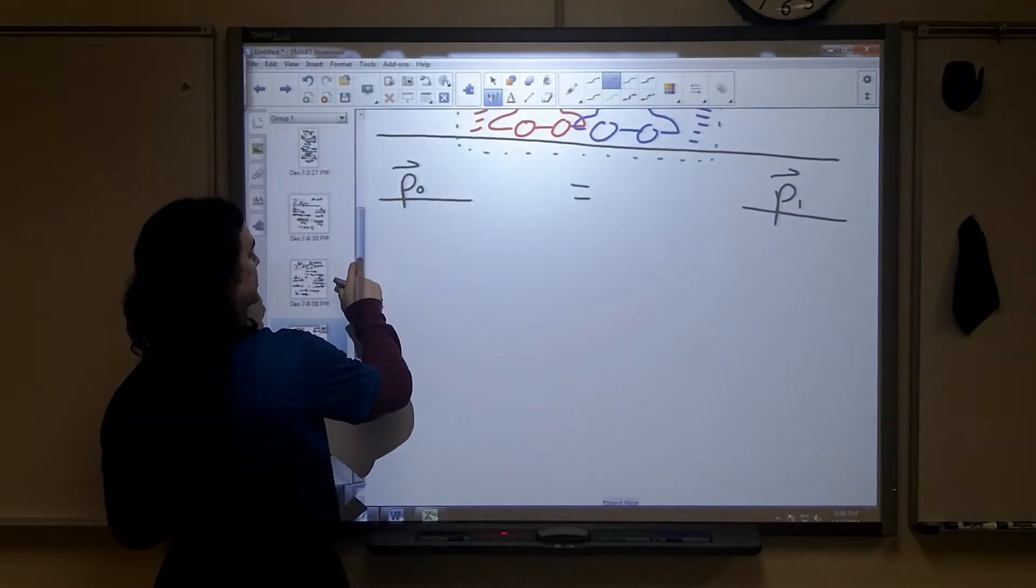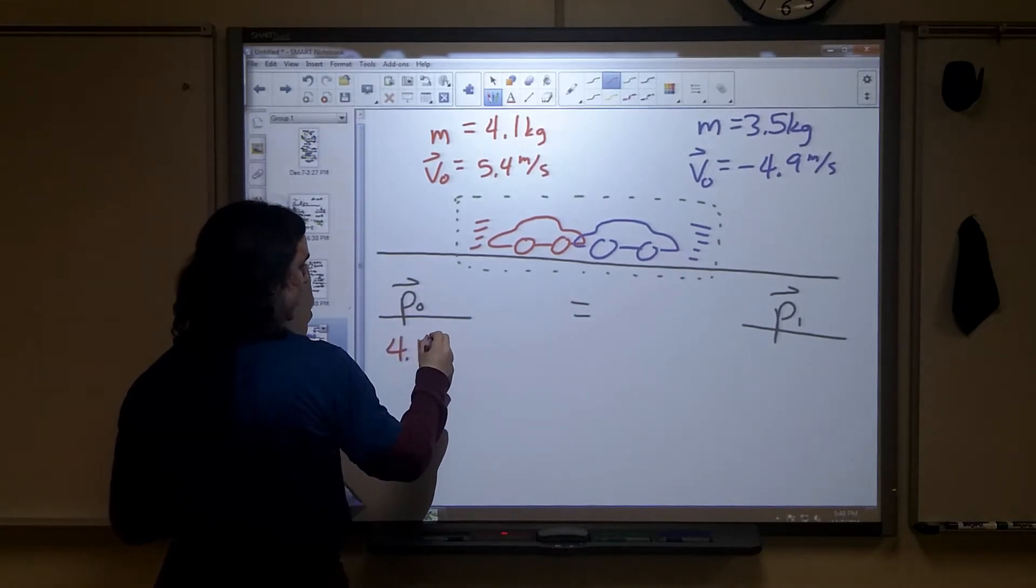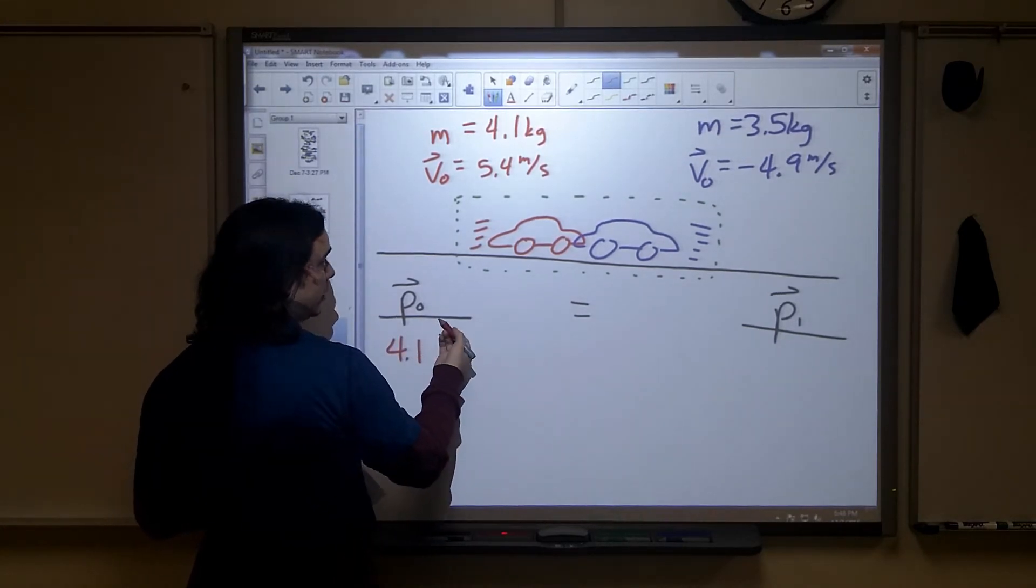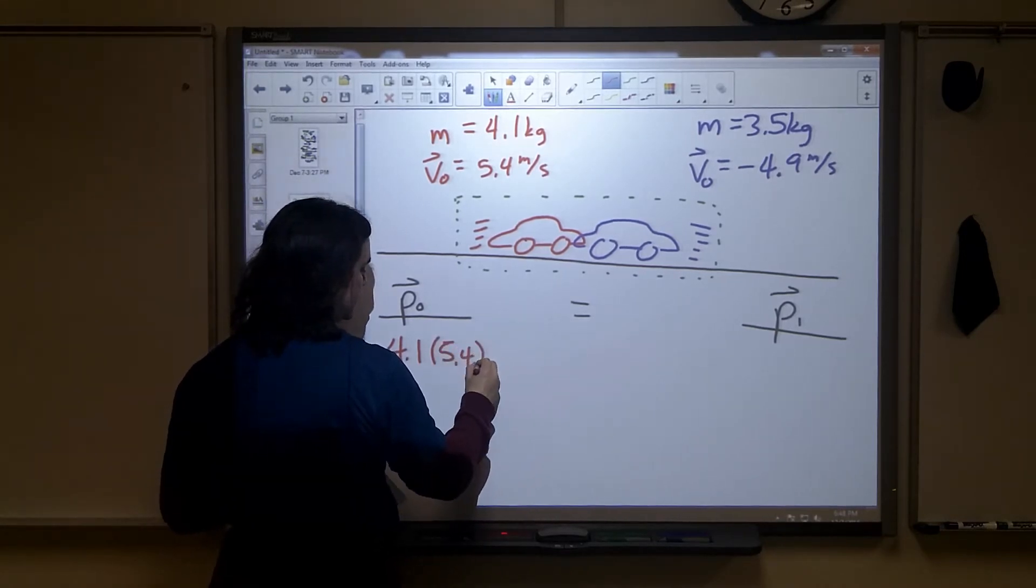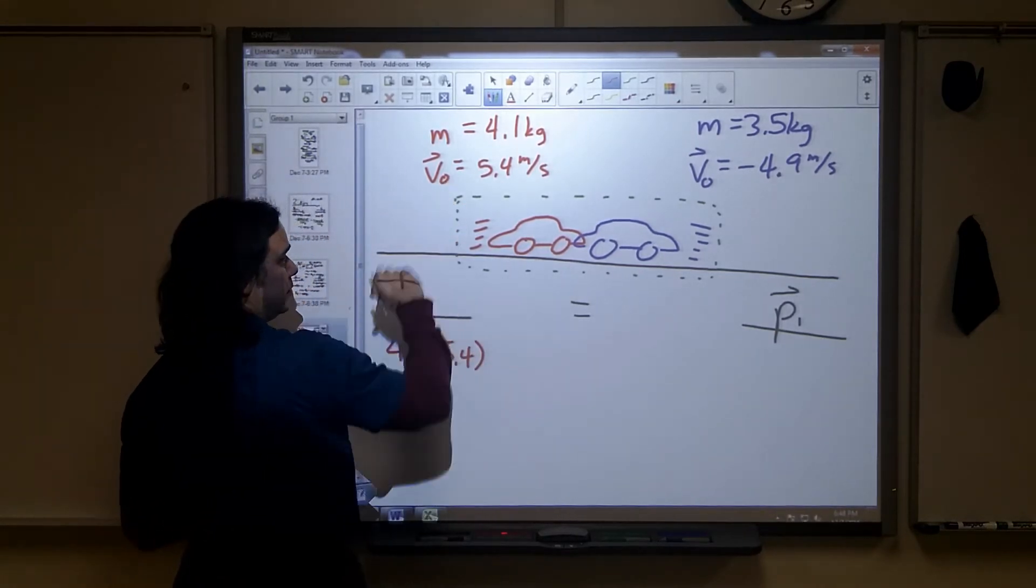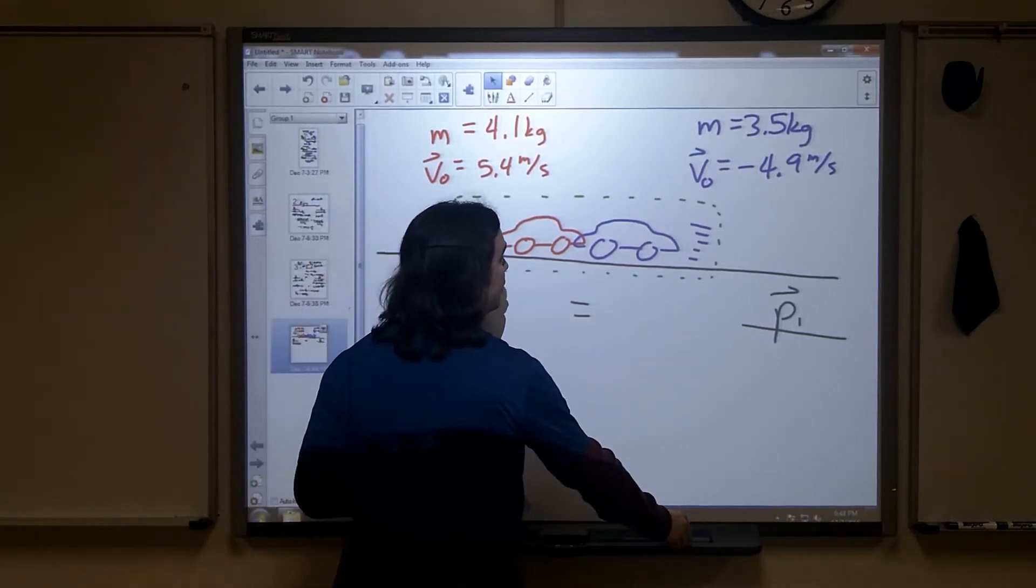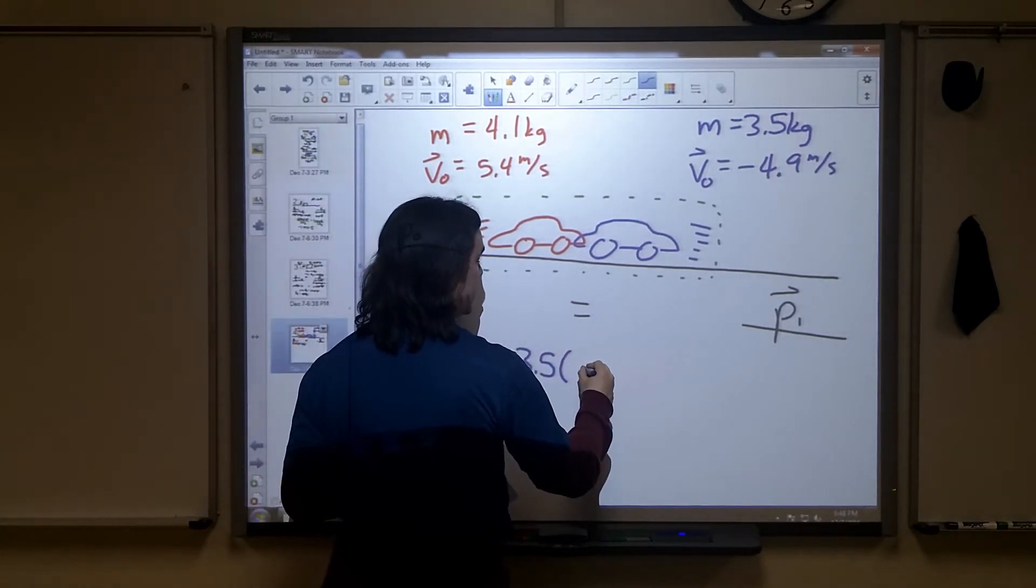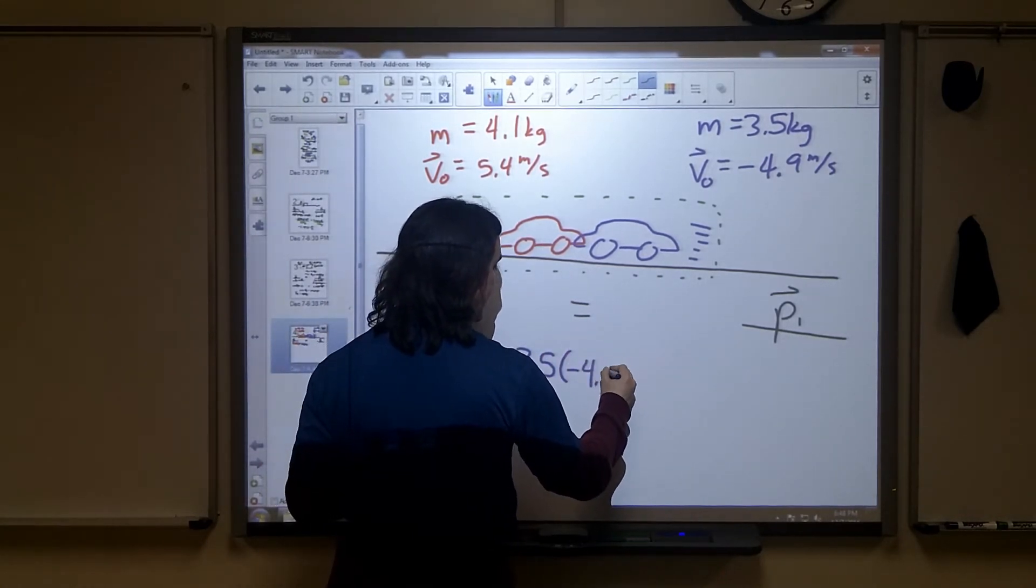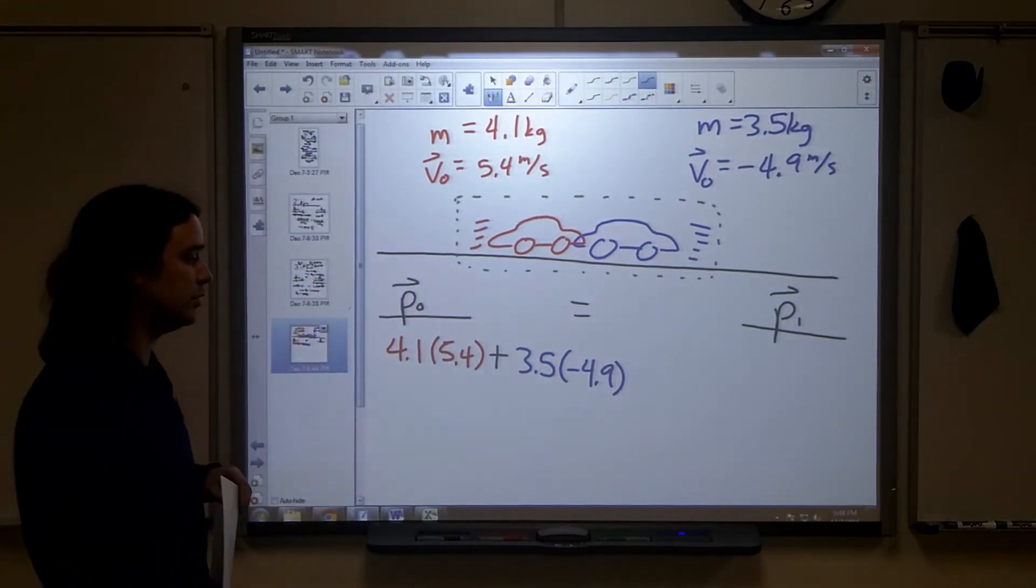All right. Well, the initial momentum will be the momentum of the red cart plus the momentum of the blue cart. So in this case, 4.1 kilograms, I'm going to leave the units off, we've seen a few of these now, times 5.4 meters per second. That's going to be my momentum for the red cart. Plus, adding the momentum of the other one, which is 3.5 kilograms times my velocity, negative 4.9 meters per second. Negative because it's moving to the left.